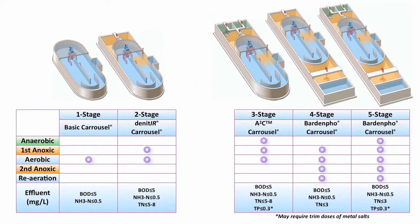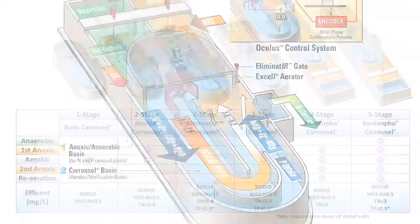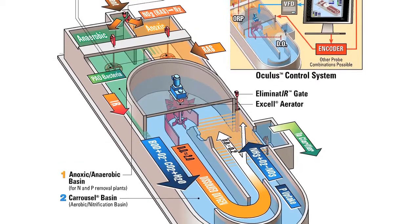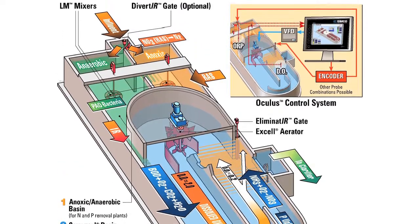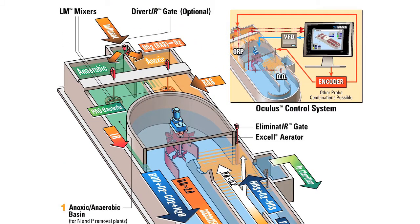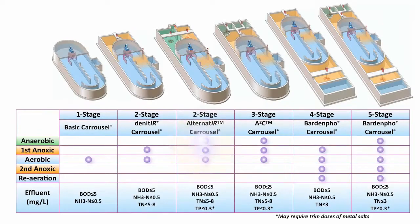New to the carousel lineup is the alternator system. This 2-stage system automatically creates both anaerobic and anoxic conditions through smart internal recycle control, resulting in an effluent quality right on par with the dedicated 3-stage system. The 4 and 5 stage systems are known as Bardenfo systems. Effluent total nitrogen of 3 mg per liter and effluent total phosphorus of 0.3 mg per liter are achievable with carousel systems.